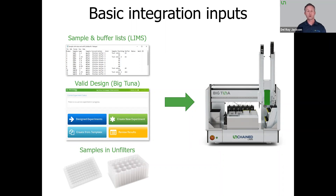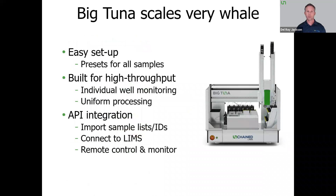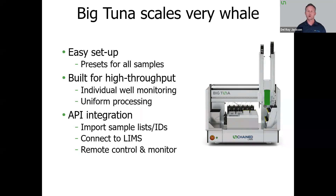If you want physical or robotic integration into BigTuna, that's possible and straightforward because all that needs to be done is to deliver your samples in the Unfilters to and from the BigTuna. BigTuna scales very well. As a standalone solution, it's easy to set up with presets for all the gene therapy biomolecule samples you might need to run. It's really built for high throughput and is the superior solution for high-throughput buffer exchange and concentration. And finally, our new API makes it that much easier to connect it directly to your LIMS and have remote control and monitoring.